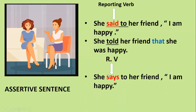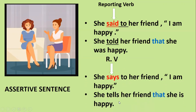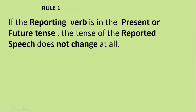Now look at: she says to her friend, 'I am happy.' When the reporting verb is in present tense, no need to change the tense at all. So: she tells her friend that she is happy. Rule one: if the reporting verb is in present or future tense, the tense of the reported speech does not change at all.